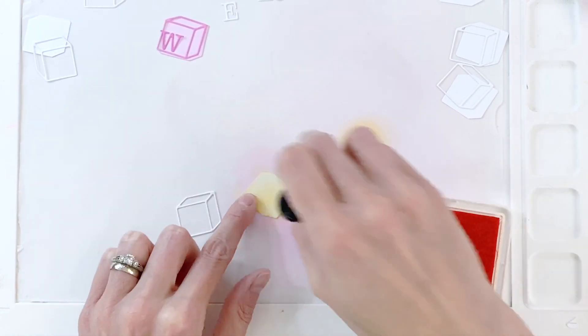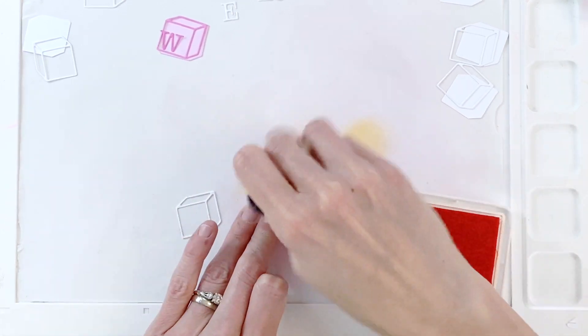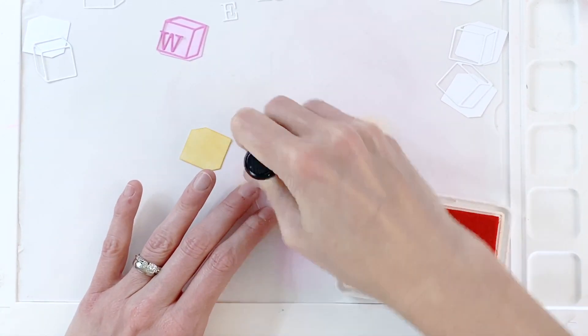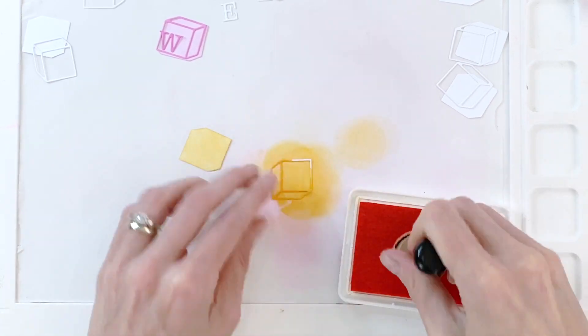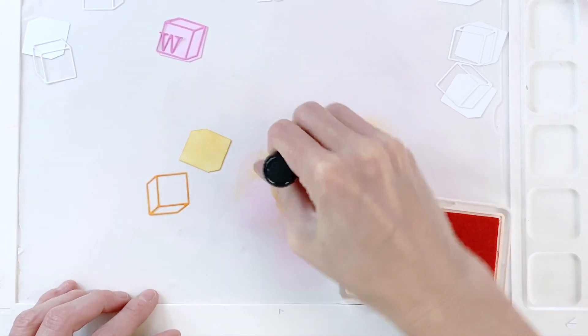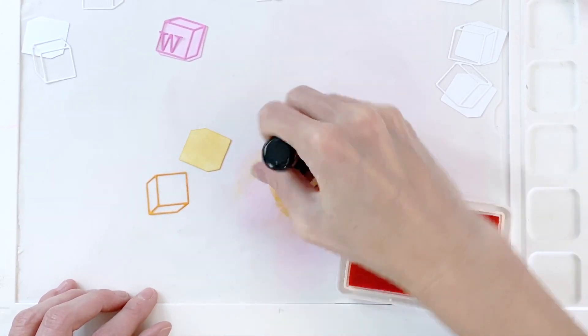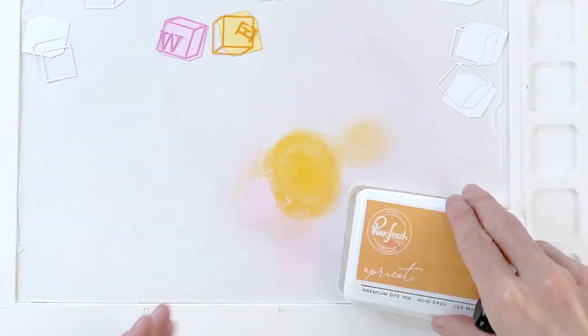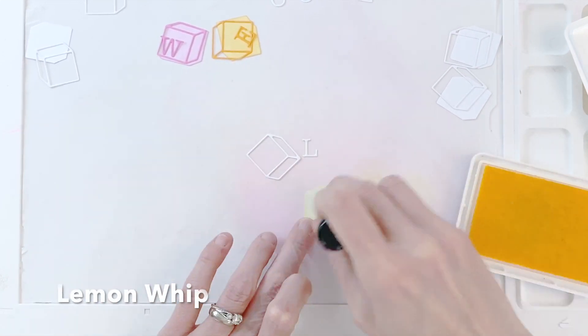Making a rainbow here so I moved on to an orange. This is apricot and again I'm going to repeat that process. Blend the background of the block lightly and then blend more heavy handedly the outline and the letter that goes in that block. And once I finish ink blending all three pieces I'll then put them aside and then move on to my next color.